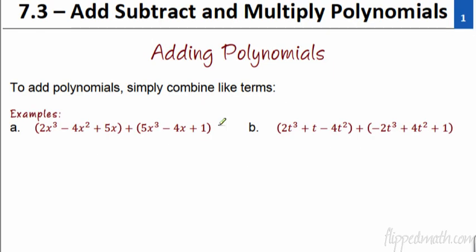To add polynomials, we just combine the like terms. That's easy enough, so we have to remember what like terms are. We're going to go through and look here. We have 2x to the third power. Remember, we're always looking at the exponent. So we have 2x to the third and 5x to the third — we can add those together.